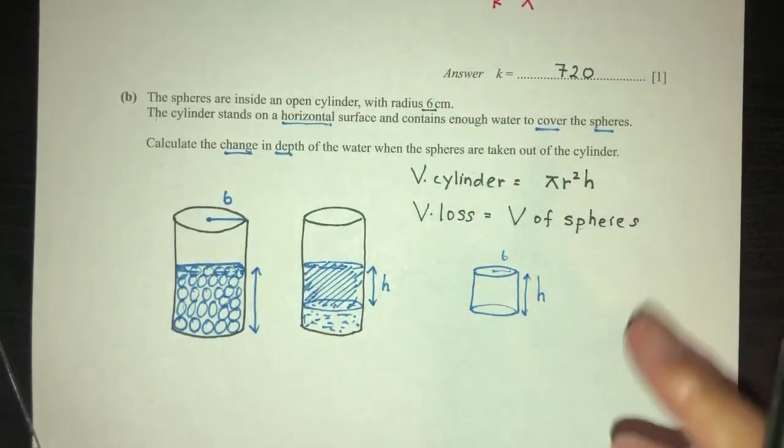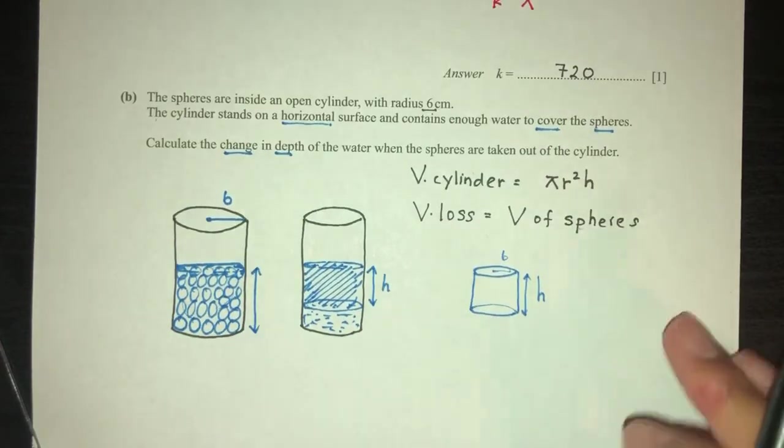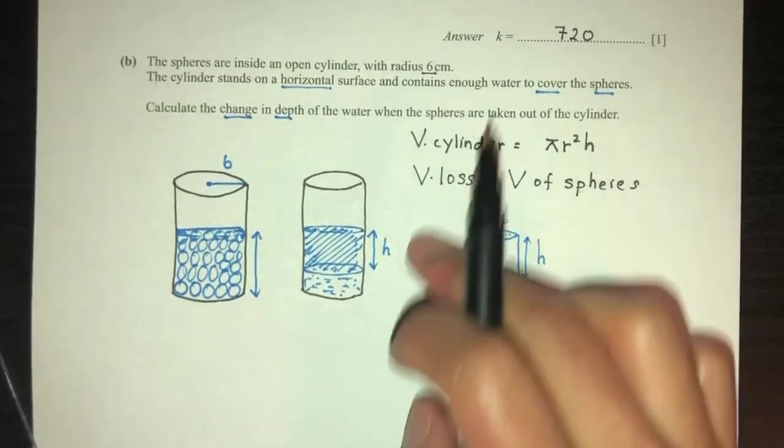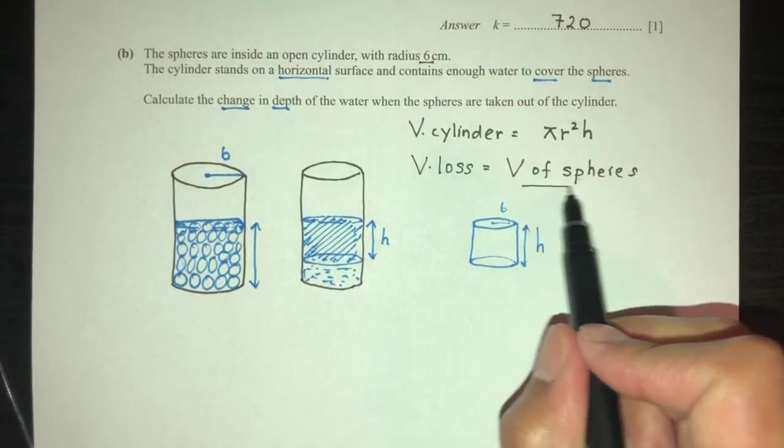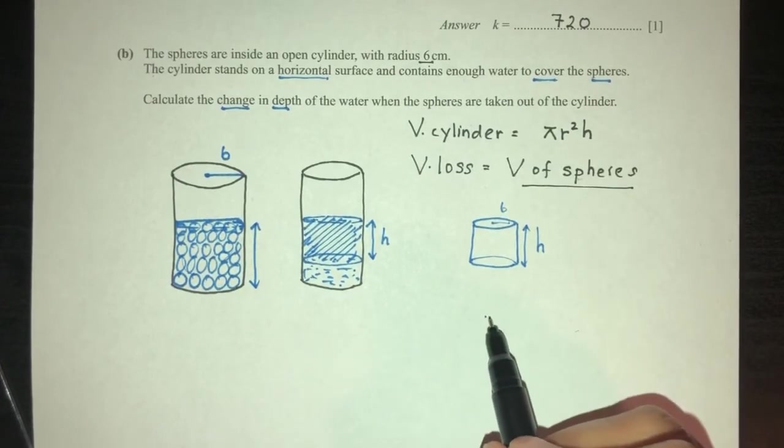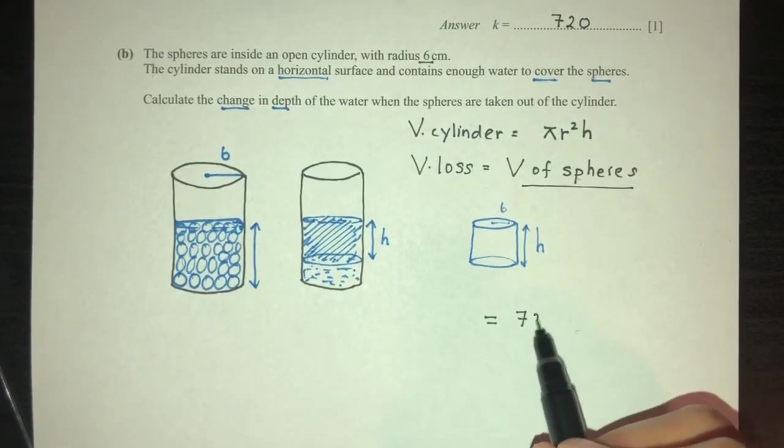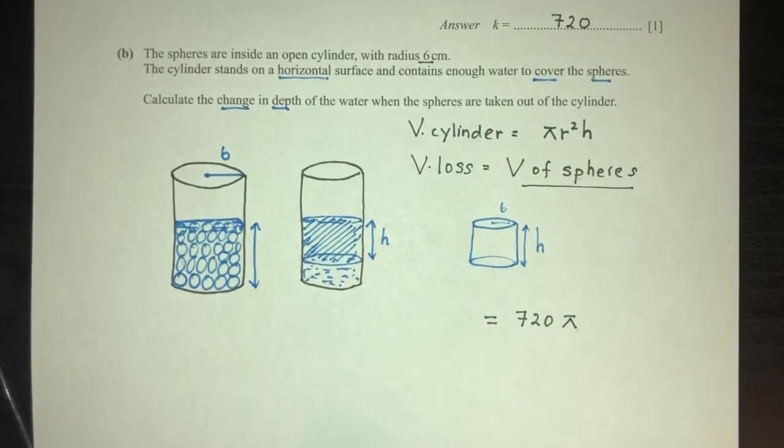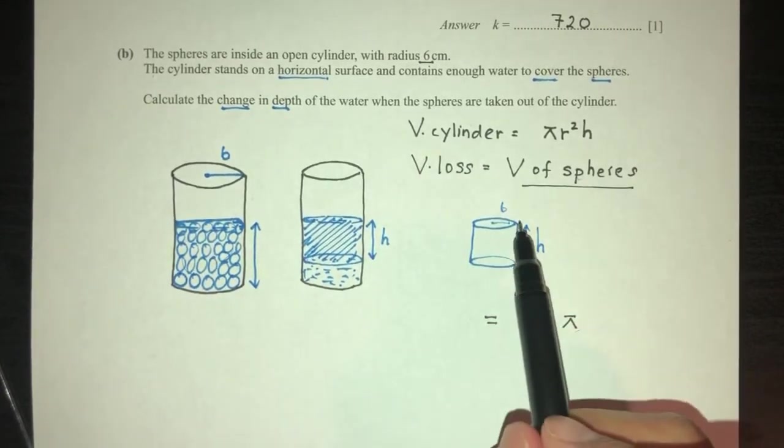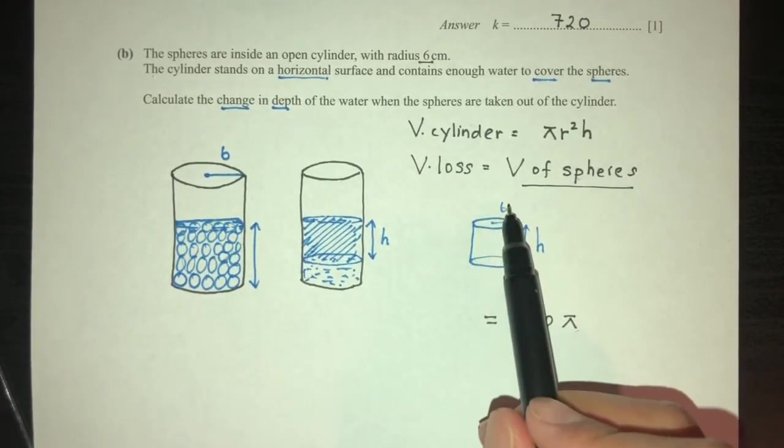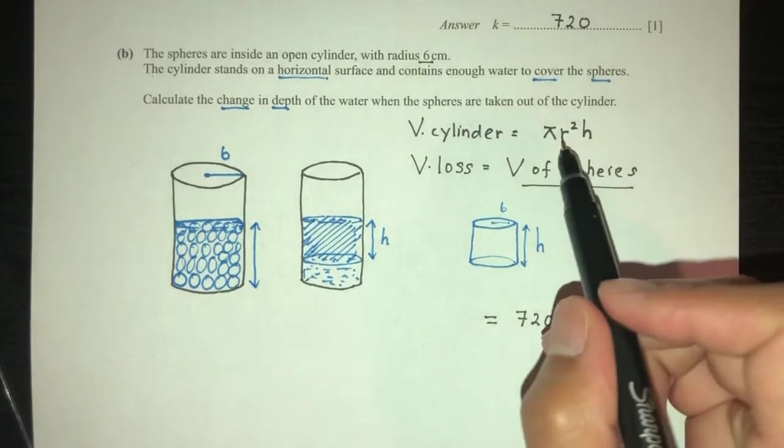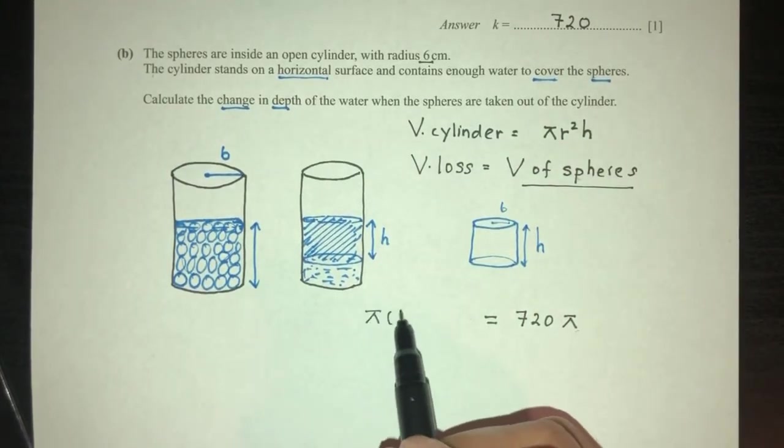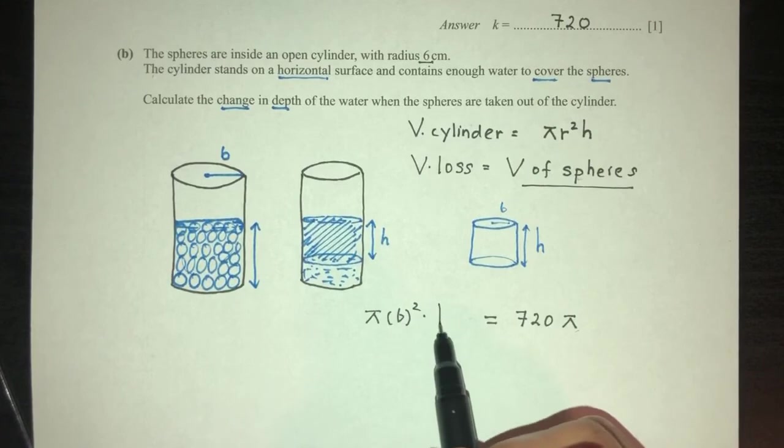We know this from part one. Volume of spheres is equal to 720 pi. Now, volume loss is equal to this volume of a cylinder, with radius 6 and height h. We'll place back in your equation, that is pi, 6 square h. We have to find this value of h.